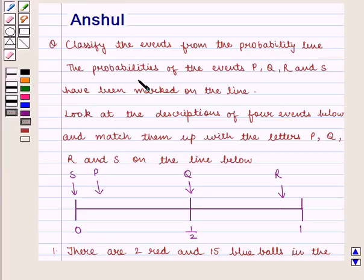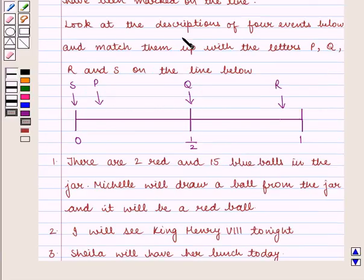The probabilities of the events P, Q, R and S have been marked on the line. Look at the descriptions of four events below and match them up with the letters P, Q, R and S on the line below.